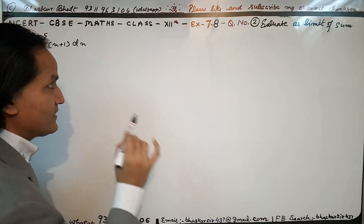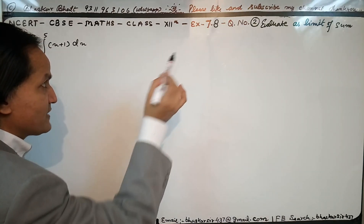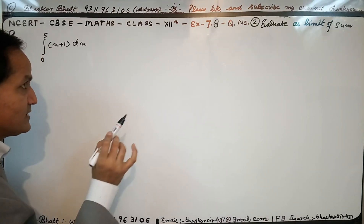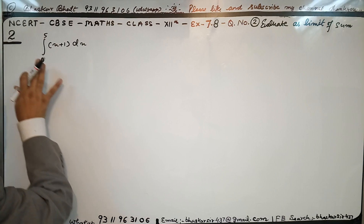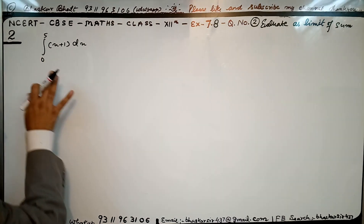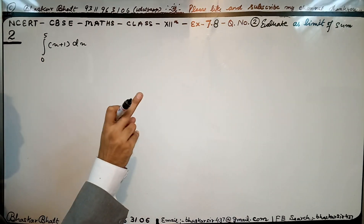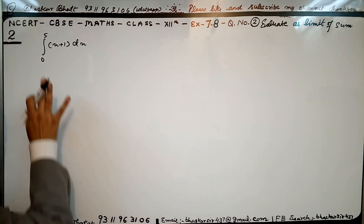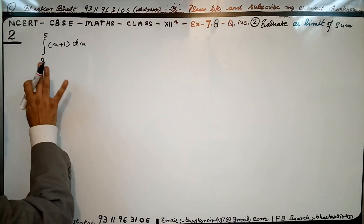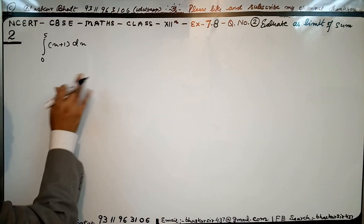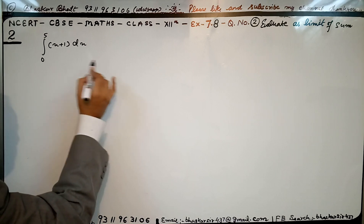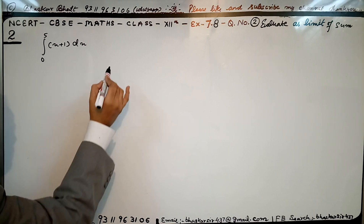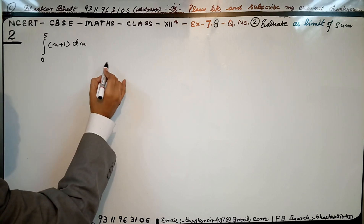We are starting the second question of exercise 7.8 — evaluate the definite integral as a limit of sum. We have to do the limit of sum, we have to do the coding. And we know that the limit of sum can be defined.